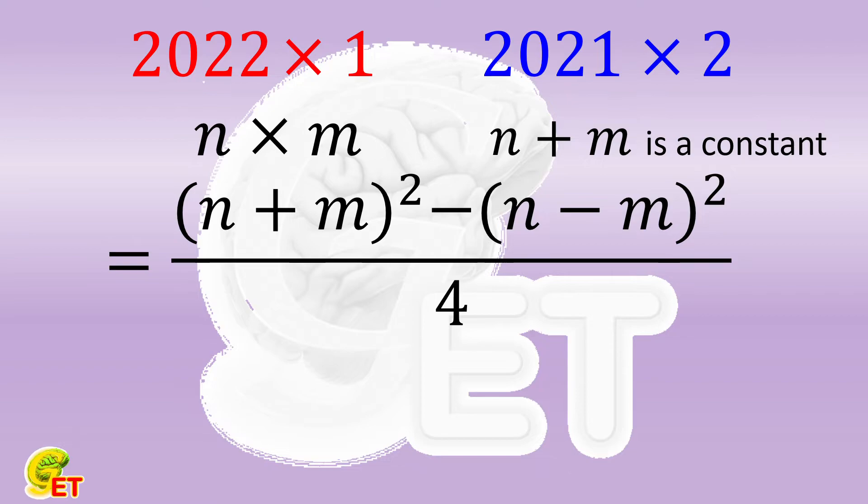Going back to our current example, the summation of n and m is fixed at 2023. On the left side, their difference is 2021. On the right side, their difference is 2019. So the left side is smaller.